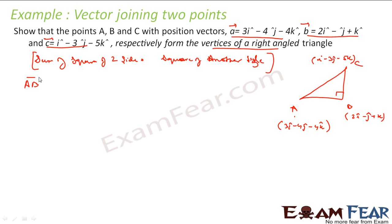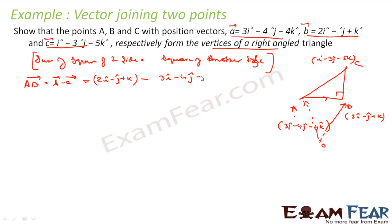Vector AB = B − A. Vector B is 2i − j + k, minus vector A which is 3i − 4j − 4k. Solving: (2−3)i = −i, (−1+4)j = 3j, (1+4)k = 5k. So AB vector = −i + 3j + 5k.